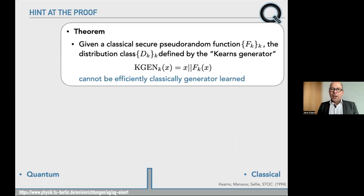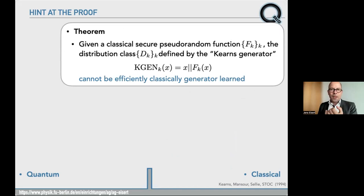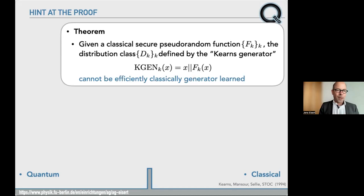Given such a pseudorandom function, the distribution classes are constructed by a generator that takes seed randomness and appends the output of that pseudorandom function after this randomness. That gives rise to a family of distributions that cannot be efficiently classically generated — a hard-to-learn classical distribution. No matter what you do, you cannot efficiently learn this distribution. It builds much on notions of security, and for that reason we have a collaborator with a background in mathematical security on our team, which is really much fun.